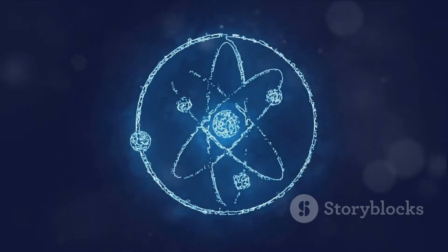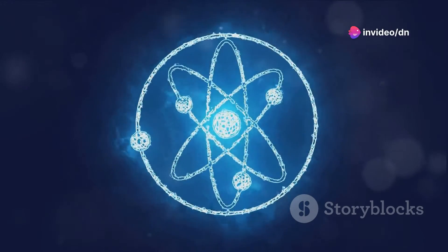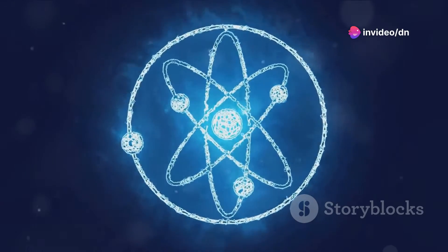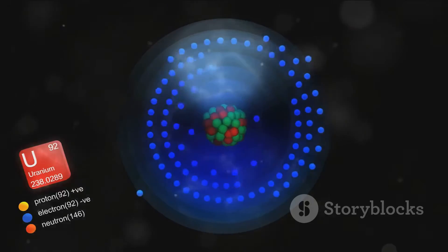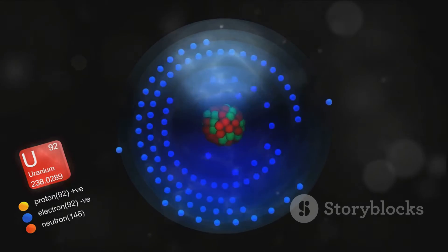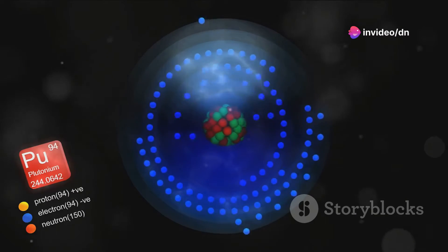Once the fusion occurs, we don't immediately have our new super-heavy nucleus. This newborn nucleus is typically in an excited state, with an excess of energy. It needs to cool down, and it does this through a process called neutron emission. This is where it emits neutrons, reducing its energy until it reaches a stable state.